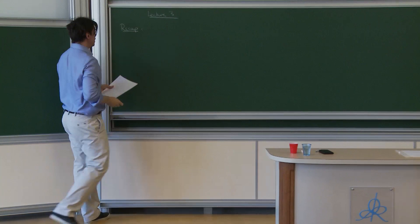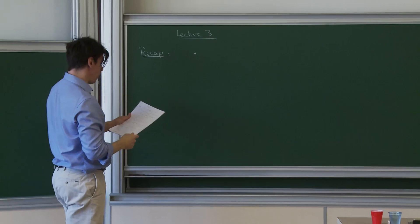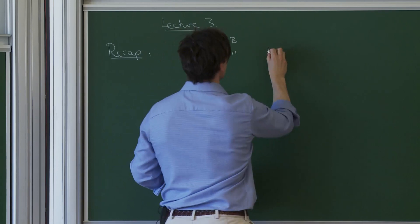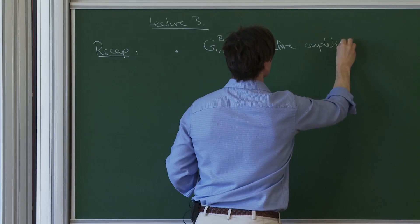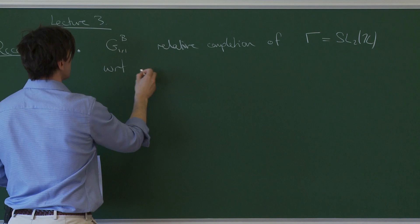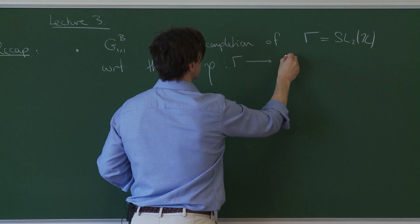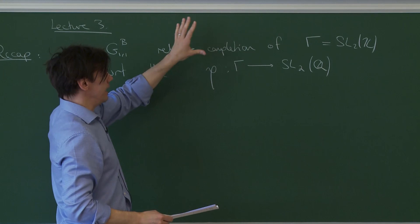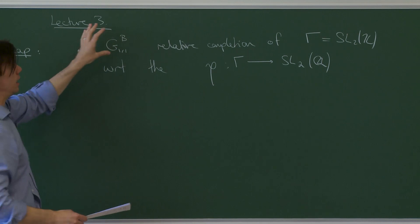So the main objects in this business are a pair of affine group schemes and a comparison isomorphism between them. More precisely, we had G11B, which is the relative completion of gamma equals SL2(Z) with respect to the inclusion, the natural map rho into the Q points of the algebraic group SL2. So B stands for Betti. This is just the group completion defined in the first lecture, but it has an interpretation as local systems as explained in the second lecture. So this is an affine group scheme.